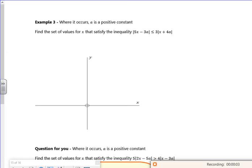Right then, we're going out with a bang with this one. So I've got 5x minus 3a is a modulus bit, and 3 lots of x plus 4a.